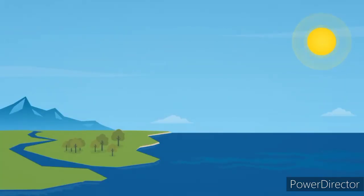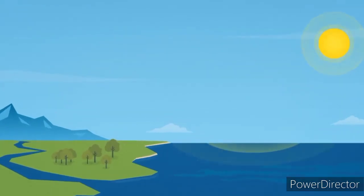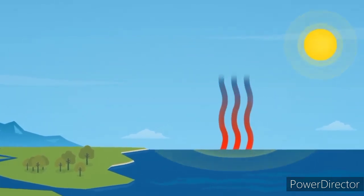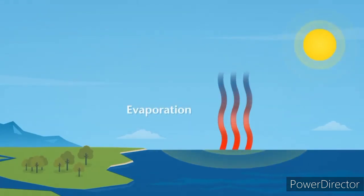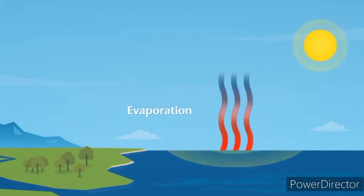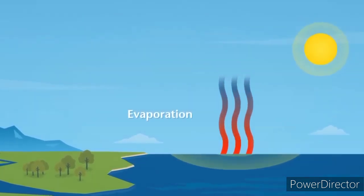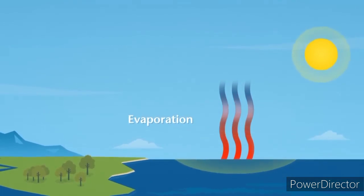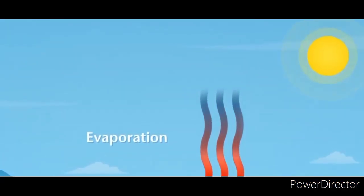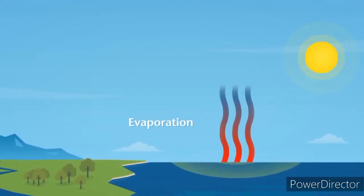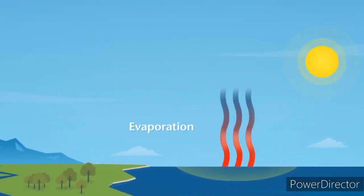When the sun shines on the water on the earth's surface, the heat of the sun warms the water, turning it into a gas called water vapor. This gas is lighter than water, and so it rises up in the air. This process is called evaporation, and this is the first step of the water cycle.